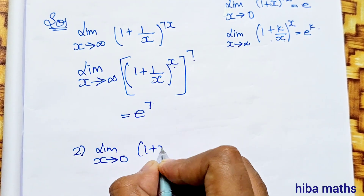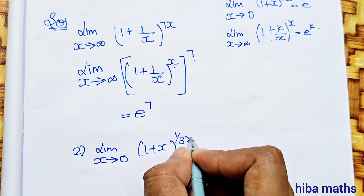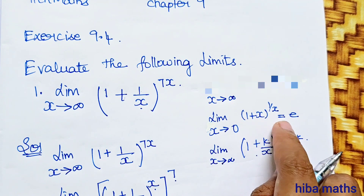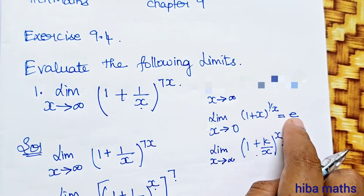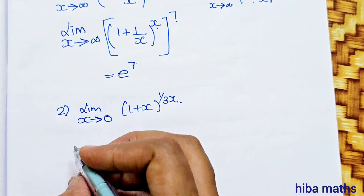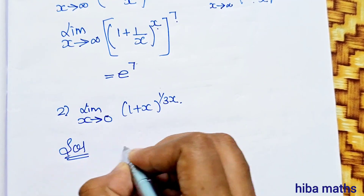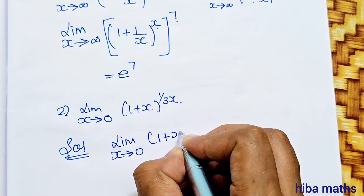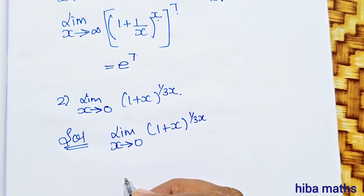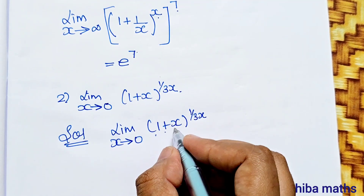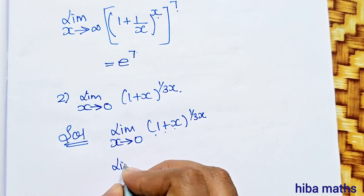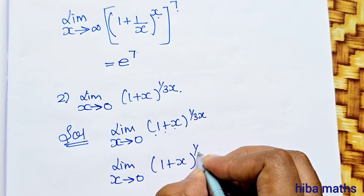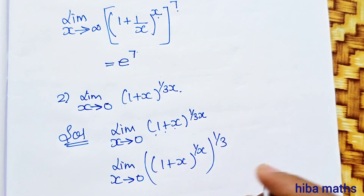Second question: Limit x turns to 0, 1 plus x, power 1 by 3x. So this is the standard form. Solution: limit x turns to 0, 1 plus x, power 1 by 3 into x. This can be written as limit x turns to 0, 1 plus x, power 1 by x, raised to power 1 by 3.